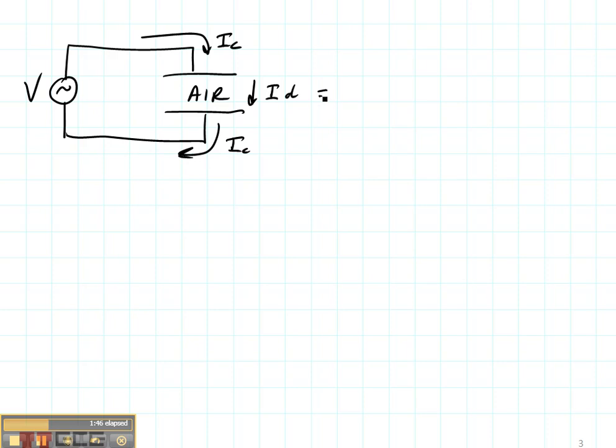The displacement current term is going to be the integral of the displacement current density over the surface. That is going to be the integral over the surface of the electric flux density that's passing through that surface. So if I had been given the electric flux, it would be very easy to calculate the conduction current from this equation.